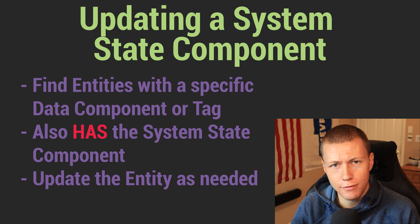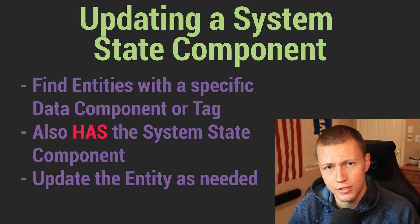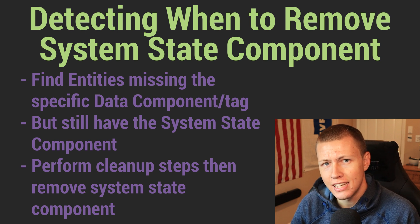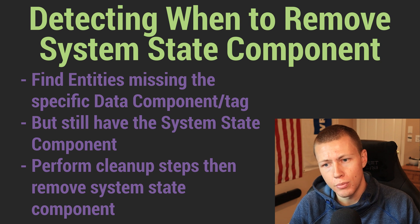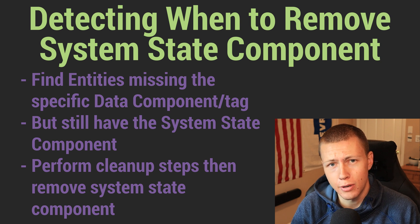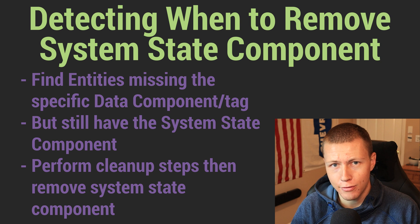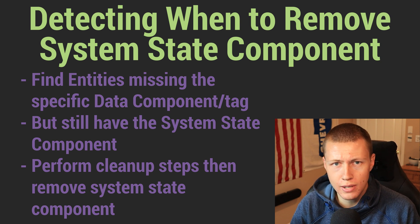The second phase is the normal update phase, where we filter entities that have both the normal data component and the system state component and perform general operations referencing both. The third phase is detecting when cleanup needs to happen — this occurs when the entity no longer has the normal data component but still has the system state component. This means the entity is in a destroyed state with only the system state component remaining. We run our cleanup steps and then remove the system state component, at which point the entity is actually considered destroyed and its ID can be recycled.